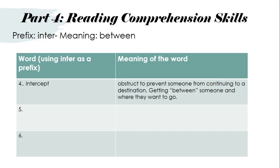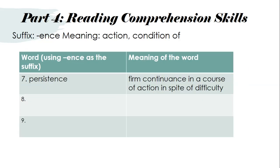We're going to move on to the last one, which is the suffix -ence (E-N-C-E), meaning action or condition of. The example word is "persistence" — a firm continuance in a course of action in spite of difficulty. You continue going even if it's difficult. Come up with two more words using the suffix -ence and create the meaning of each word. Staff in the room, please pause so everyone can write down "persistence" and its definition, plus two new words with the suffix E-N-C-E.